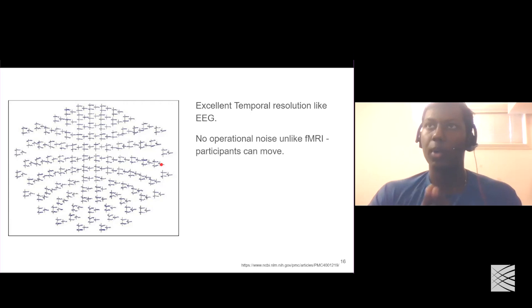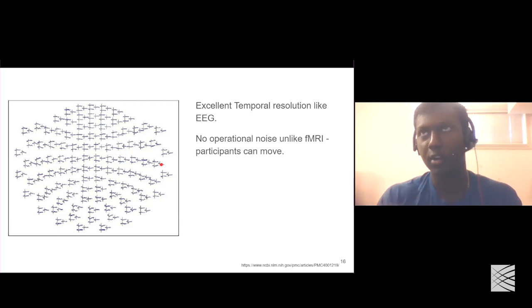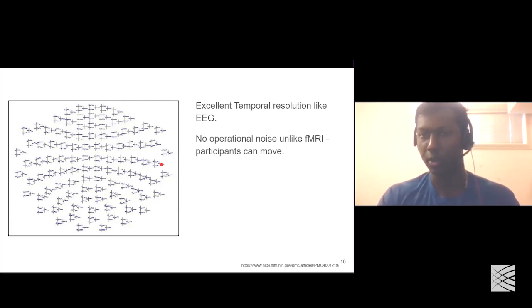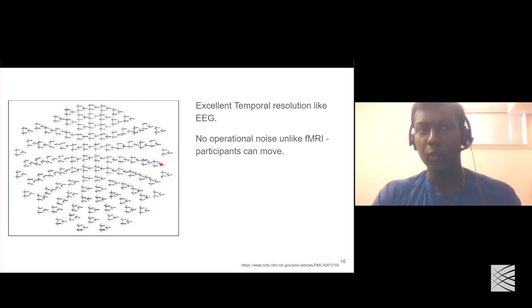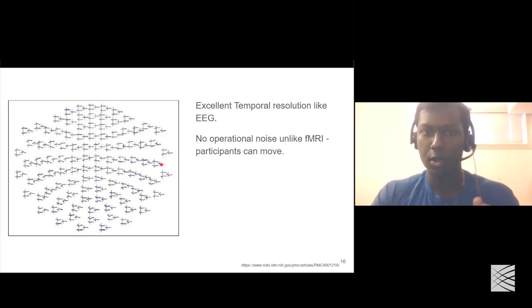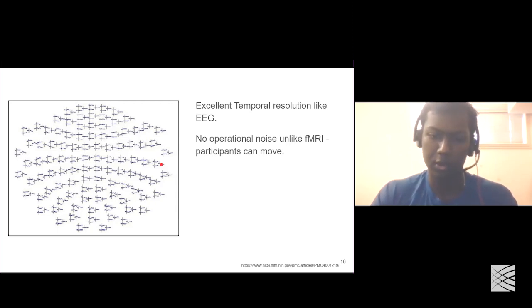Unlike fMRI, where participants cannot move because the images get distorted, in MEG the participants are free to move their head around. This is one of the reasons babies can also be studied — they move their heads a lot. So MEG or EEG is one of the go-to methods when we try to record data from babies.